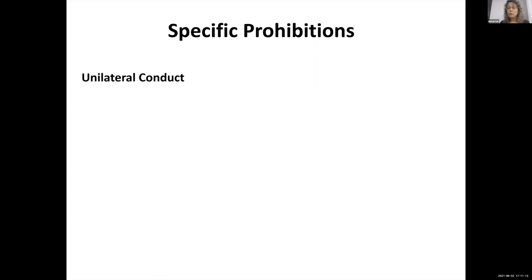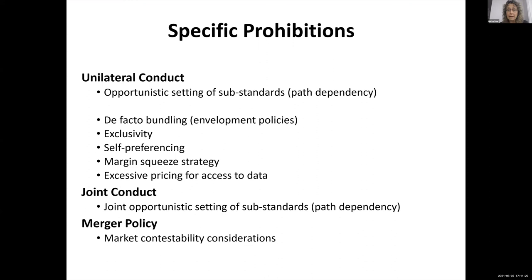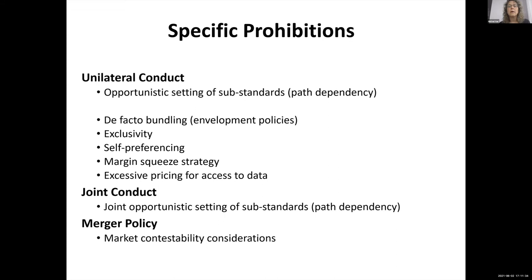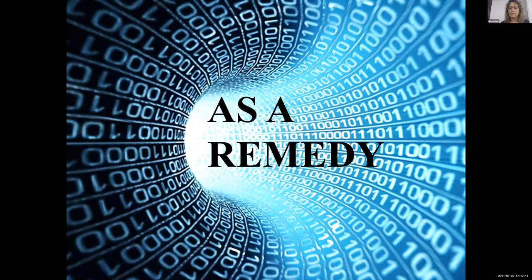Does this translate into antitrust prohibitions? It definitely might. With regard to unilateral conduct, it might be opportunistic setting of sub-standards, defective bundling, exclusivity, self-preferencing, margin squeeze strategy, or excessive pricing for access to data. With regard to joint conduct, it might be joint opportunistic setting of sub-standards for interoperability and portability. With regard to merger review, there are market contestability considerations affected by interoperability and portability standards. Also, refusal to supply with regard to unilateral conduct.